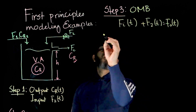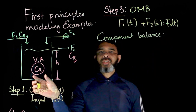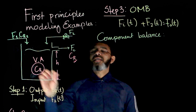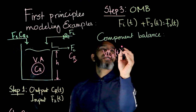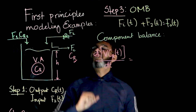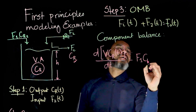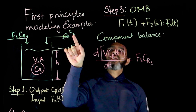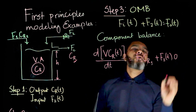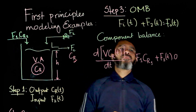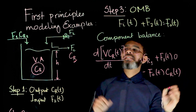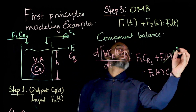Now let's focus on the component balance. There is no generation or consumption term since there is no reaction. The rate of accumulation is V times d(CR)/dt. The rate in of the solute is F1·CR1. For stream F2, which is pure solvent, the concentration is zero — no solute is coming in with that stream. The rate out is F-naught(t) times CR(t).